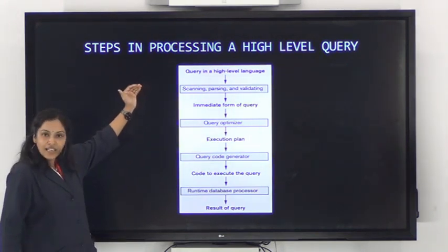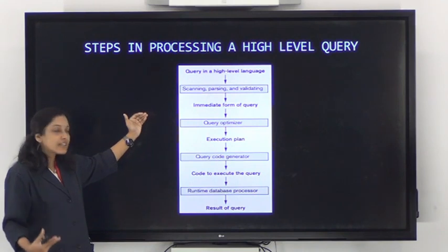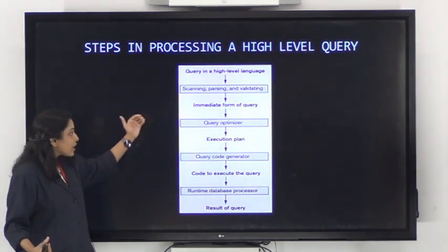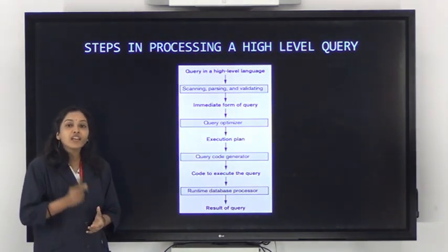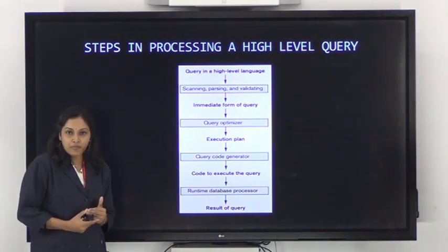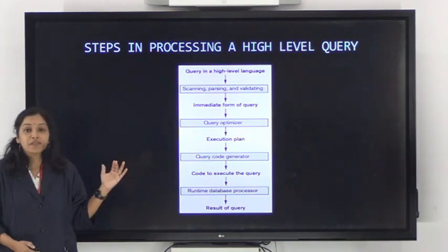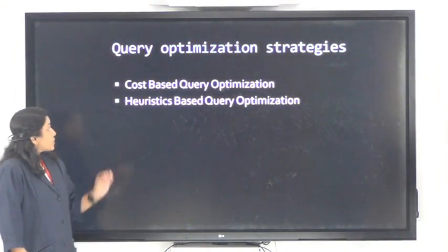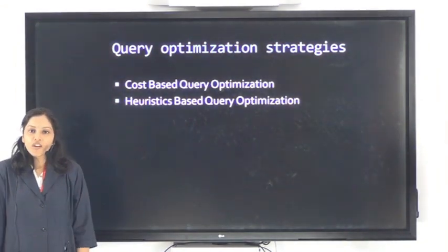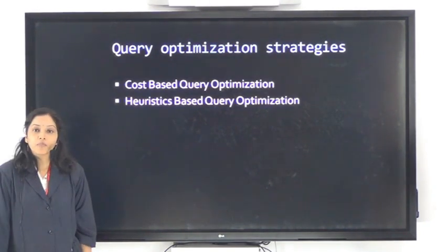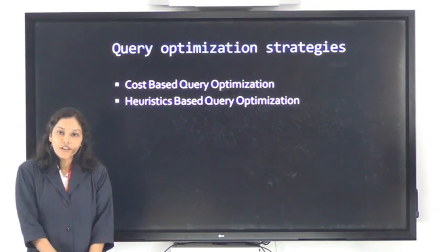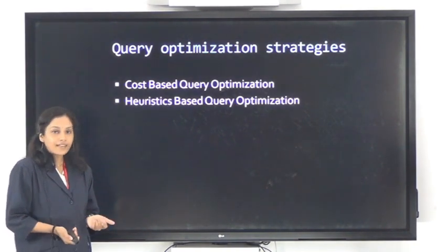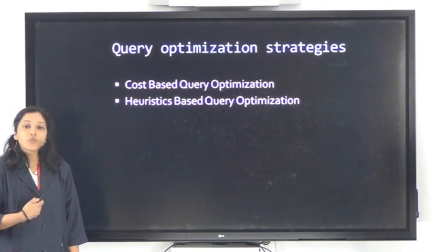There are two query optimization strategies. The first is cost-based query optimization and the second is heuristic-based query optimization. As per the syllabus, we have to learn both, but we will first see what cost-based query optimization is.